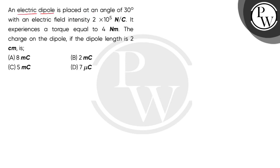An electric dipole is placed at an angle of 30 degrees with an electric field intensity 2 × 10^5 N/C. It experiences a torque equal to 4 Nm. The charge on the dipole if the dipole length is 2 cm is: